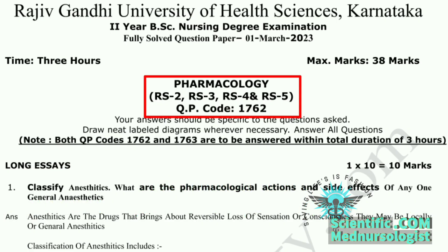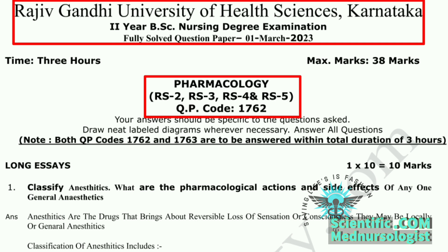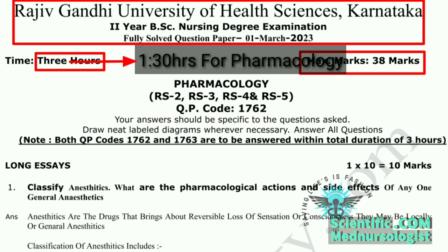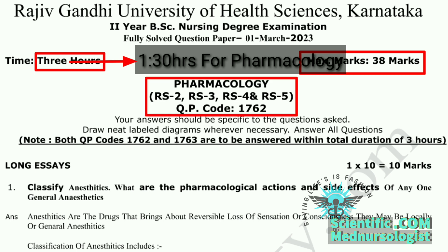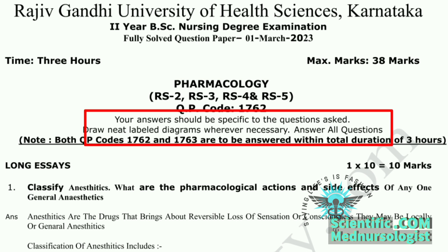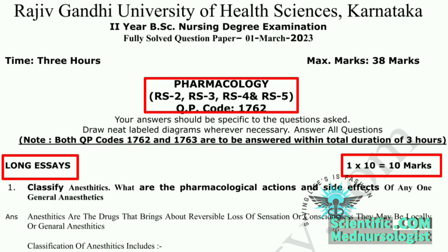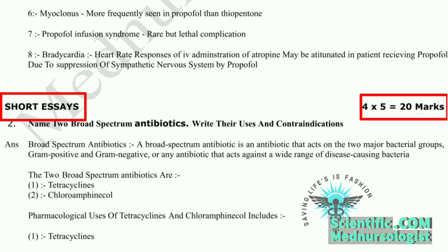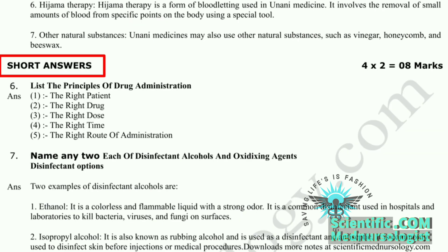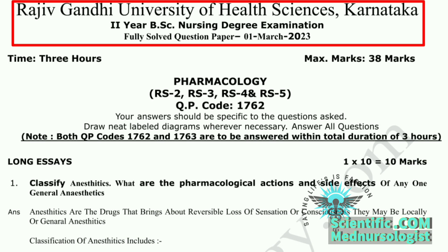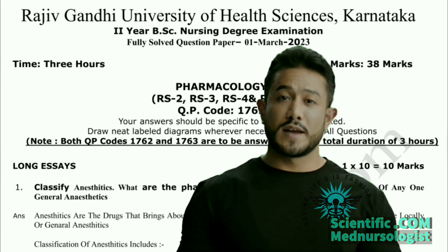This is the pharmacology question paper for BSC nursing second year students of RGHS, which is of 38 marks in one and a half hours timing. It is for RS2, RS3, RS4, RS5 batches and QP code is 1763. Instructions are the same as always: answer all questions, draw diagrams, write specific answers. The question paper consists of 3 parts: first part is long essay which carries 10 marks, second part is short essay which carries 20 marks, and third part is short answers which carries 8 marks.